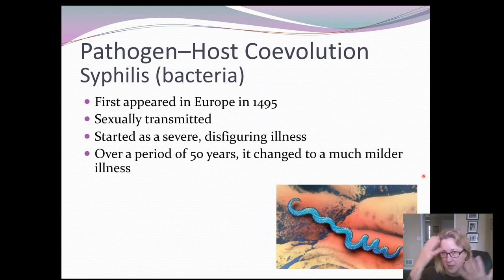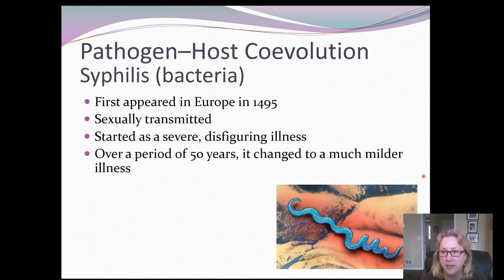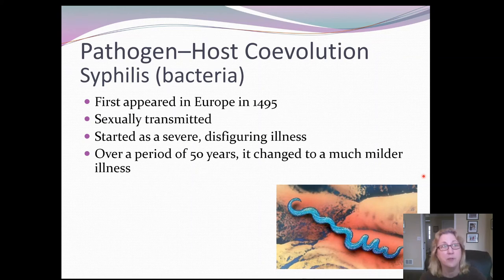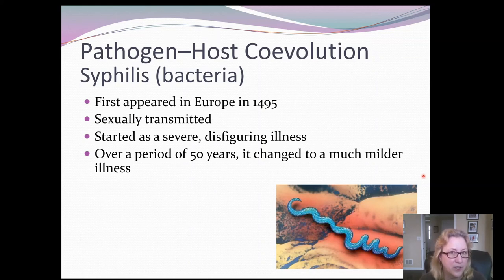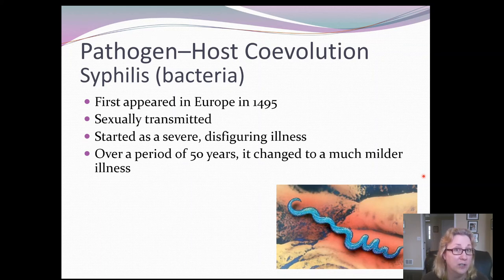People would lose their hair and have large sores over large portions of their body. Over the course of about 50 years, it went from being this visibly noticeable condition — where everybody could see that a person had it — to being something really mild, where people would only get sores in their genital region with much milder symptoms. It was still fatal, but it took much longer to be fatal.